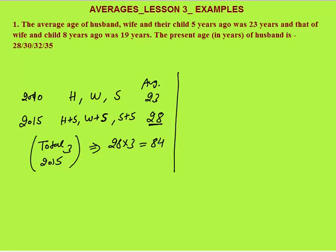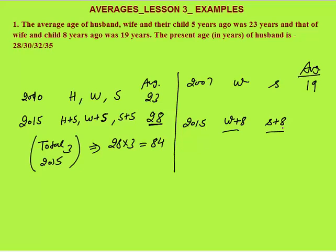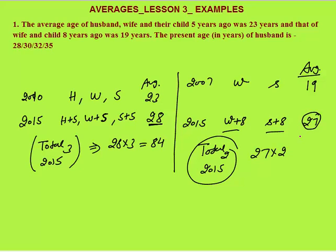The second statement says that eight years ago — that is 2007 — the average age of wife and child was 19 years. Eight years ahead, that is 2015, wife will be w plus 8 and son will be s plus 8. Their present average will be 19 plus 8 equals 27 years, because each observation increased by 8, so the average also increases by 8. The total present age of wife and child is 27 into 2 equals 54 years.